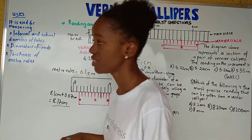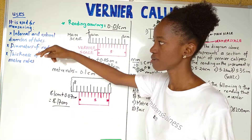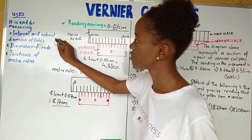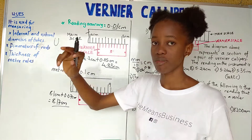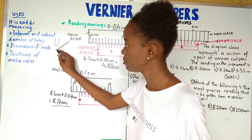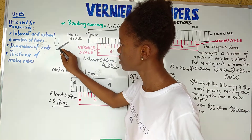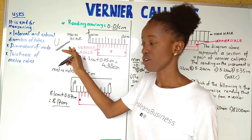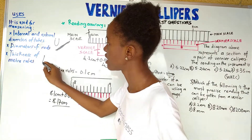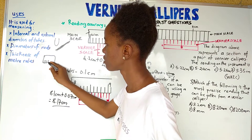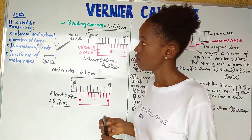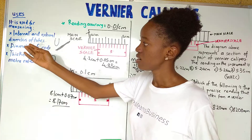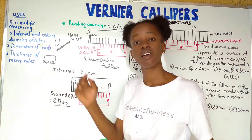Now let's look at the uses of vernier calipers. Vernier calipers are used for measuring the internal and external diameters of tubes. They are also used for measuring the diameter of rods and the thickness of metal tubes.